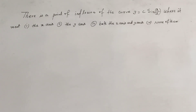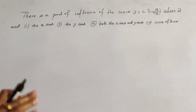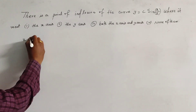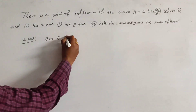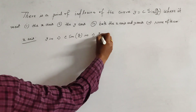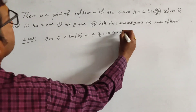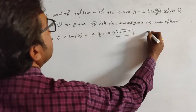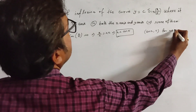If we look at this, when the curve meets the X-axis, Y is equal to 0. So this means C·sine(X/A) is equal to 0, which implies X/A is equal to nπ, that is X equal to anπ. So the point on the X-axis is (anπ, 0) for n belonging to the integers Z.